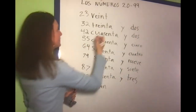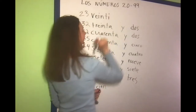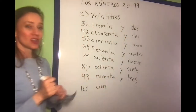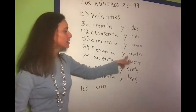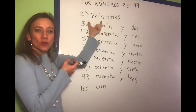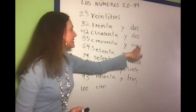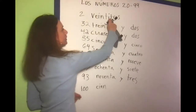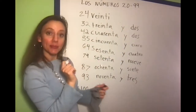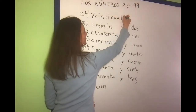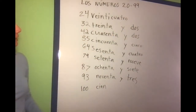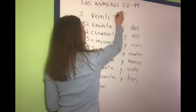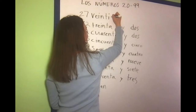Instead of saying veinte y tres, it's all going to get squished together. We're going to delete the letter E and replace it with an I. So veinte y tres becomes veintitrés. If I wanted to say 24, I keep that same beginning part and say veinticuatro. And if I want to say 27, instead of veinticuatro I would say veintisiete.